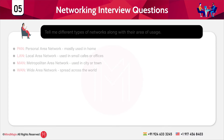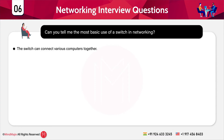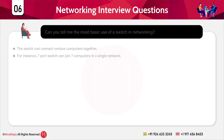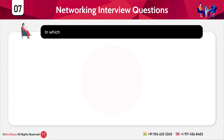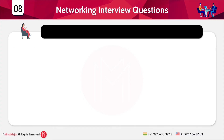The next question is: what is the most basic use of a switch in networking? A switch can connect various computers together — for example, a seven-port switch can join seven computers in a single network. Regarding topology: star topology utilizes a hub or switch as a centralized device for connectivity.